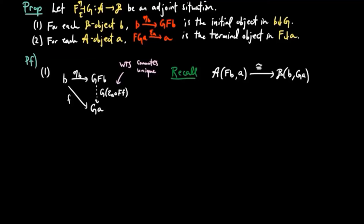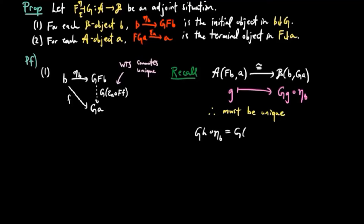The isomorphism is defined by taking a morphism G to the composition G followed by eta_B. Therefore, epsilon(A, F) must be unique. Indeed, if the diagram on the left commutes and H is another morphism which makes the diagram commute, then H and epsilon(A, F) have the same value under the above isomorphism. But an isomorphism of sets is injective, and hence H is equal to epsilon(A, F).